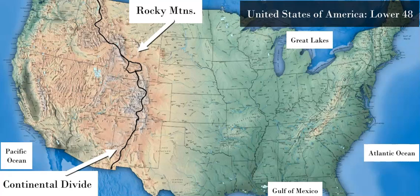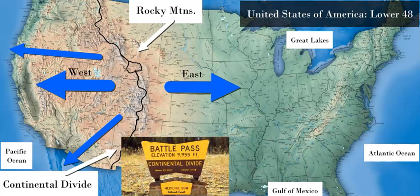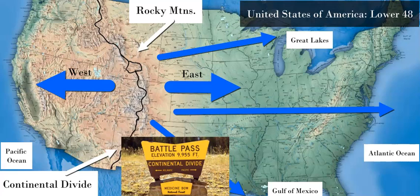This black line on the map shows where the divide is. It divides the continent's waterways, drainage basins, and river systems between those on the west side — west of this black line — which flow into the Pacific or even the Gulf of California, like the Colorado River does. On the other side, the eastern and midwest sections of the United States: any rivers that form on the east side of this divide will flow into either the Gulf of Mexico, which eventually connects to the Caribbean Sea and the Atlantic Ocean, directly into the Atlantic Ocean, or into one of the Great Lakes, which flow through river systems into the Atlantic.